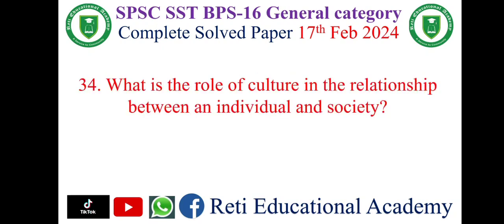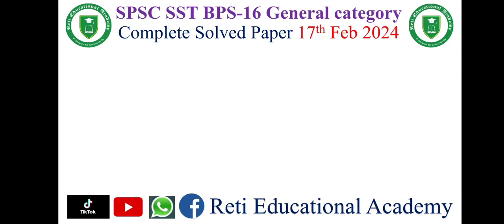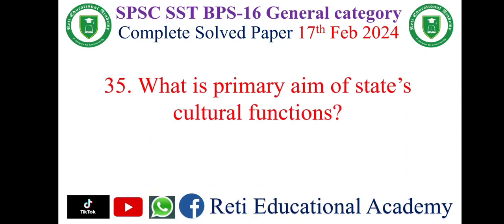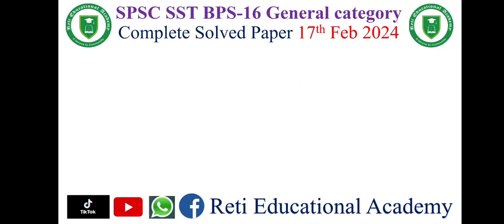Question number 34: What is the role of culture in the relationship between an individual and society? The correct answer is B — culture shapes individuals' beliefs, values, and behavior within a society. Question number 35: What is the primary aim of the state's cultural function? The correct answer is C — to preserve and promote cultural heritage.